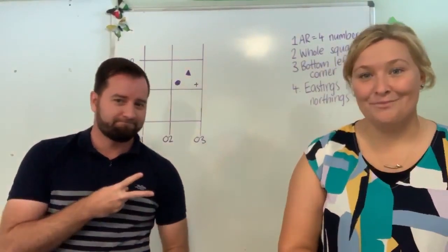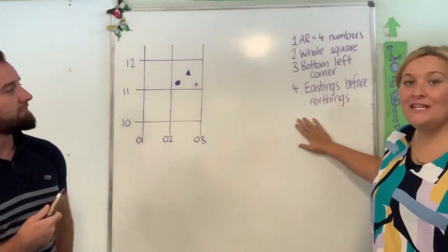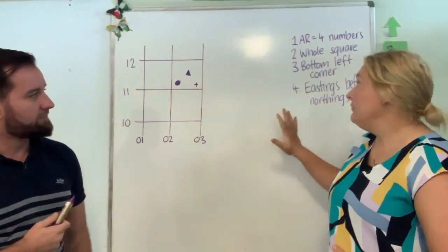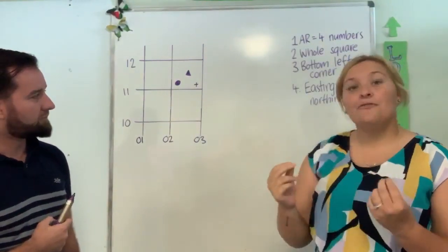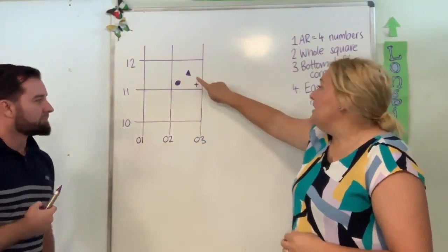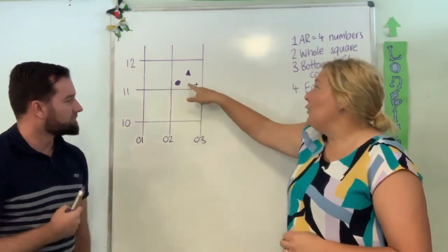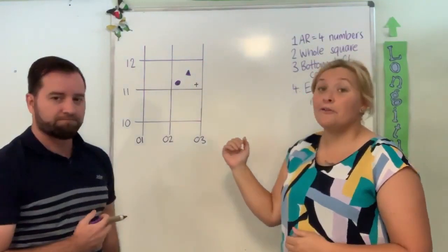Hey guys, we're back up at the whiteboard to show you a quick example. We're going to start off with area reference and we've got up here to help you guys four things that you need to remember when you're doing an area reference. Really important to remember that an area reference is four numbers and it's just showing us the general area that we're seeing. So over here, if we have a look at our little map, the triangle, the plus sign and the circle, they're all in the same general area, the same square. So they all actually have the same area reference.